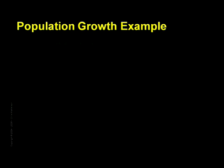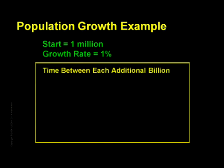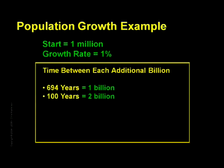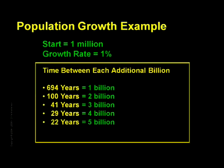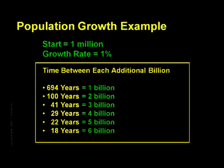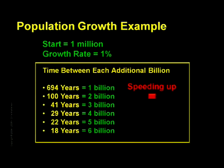To illustrate this using population: if we started with one million people and set the growth rate to a measly one percent per year, we'd find it would take 694 years before we achieved a billion people. But we'd be at 2 billion after only 100 more years, while a third billion would require just 41 more years, then 29 years, then 22, and then finally only 18 years to add another, bringing us to 6 billion people. Each additional billion took a shorter and shorter amount of time — here we can see the theme of speeding up.